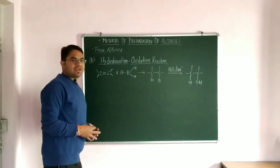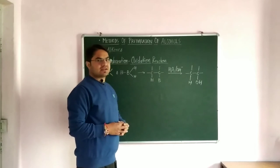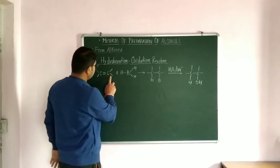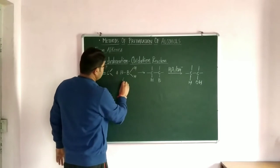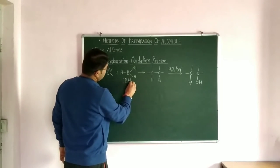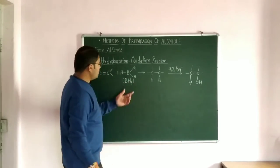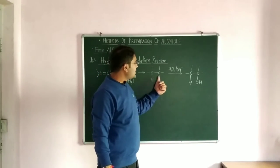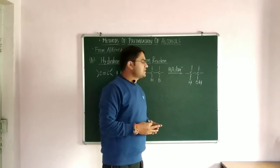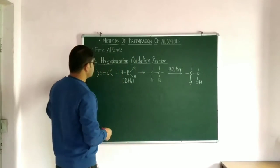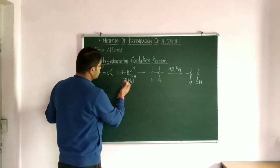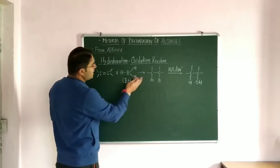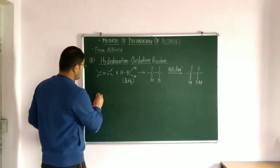Next is hydroboration-oxidation reaction, again from alkenes. The alkene is treated with borane (BH3). When borane is added to the double bond, it gives trialkyl borane, then followed by hydrolysis. The first step is oxidation in terms of addition of BH3 (borane), then followed by hydrolysis to give alcohol.